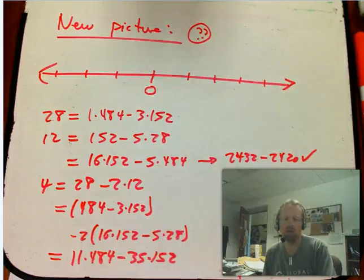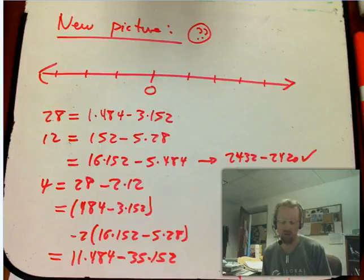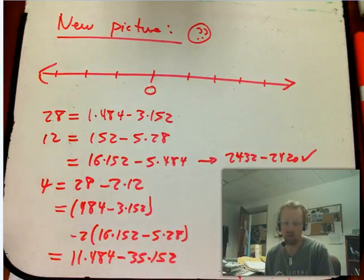So now I'm really interested in what is the new picture, the more accurate picture of how the GCD relates to the set S of all linear combinations of A and B.